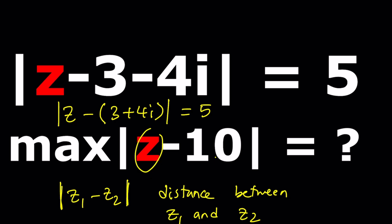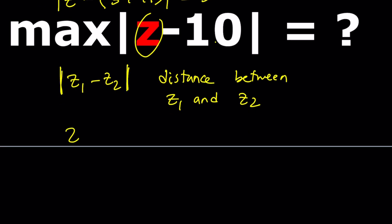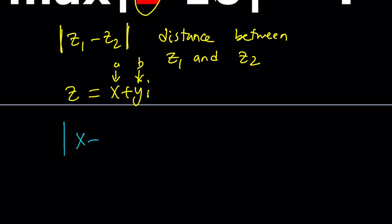Let's go ahead and work this out a little bit. This channel is called A plus BI but I'm going to replace Z with X plus Yi — so just pretend X is A and Y is B. So now we write this as X plus Yi minus 3 minus 4i. I can remove the parentheses because I'm going to gather the real and imaginary parts anyway, and this equals 5.